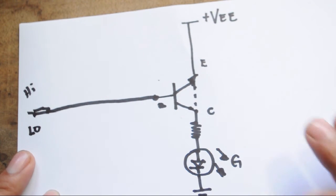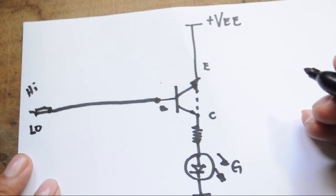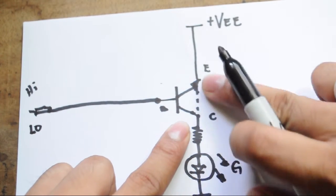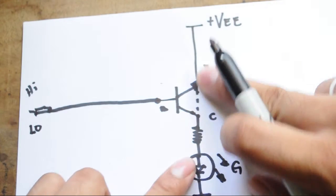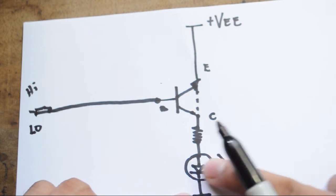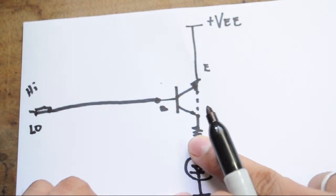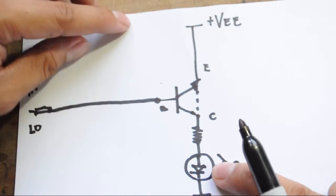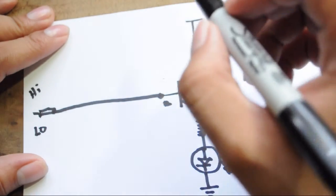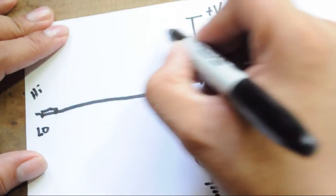So if the signal is low, the green LED will turn off because this transistor will be open. And because your signal is low, it means that the probe is connected to the ground of the test circuit.